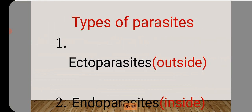Let's look at the types of parasites. One, we have the ectoparasites — that's the outside. Two, the endoparasites — that's inside. Ectoparasites are parasites that live outside the body of their host. Endoparasites are parasites that live inside the body of their host.